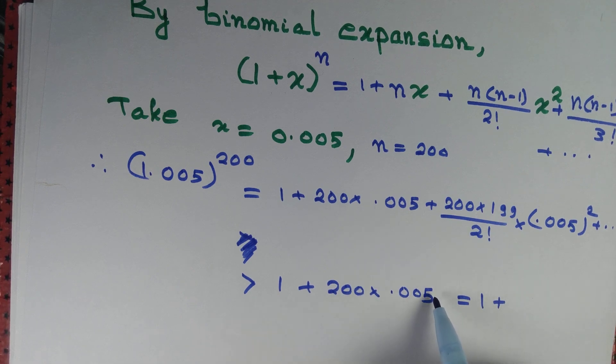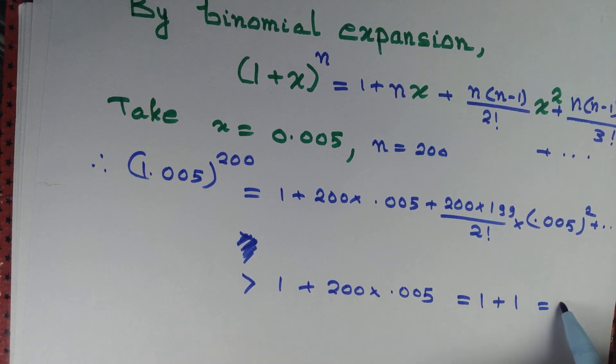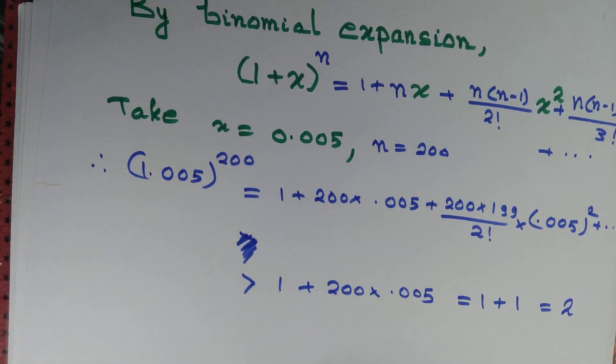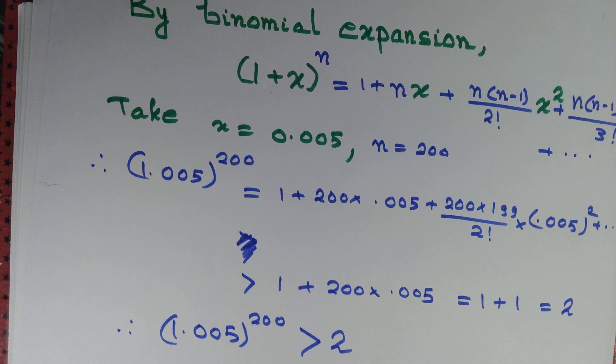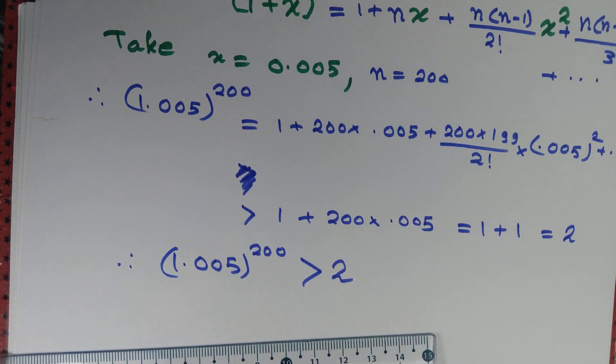And you can say which is exactly equal to 1 plus 1 equal to 2. Therefore, 1.005 to the power 200 is greater than 2, and we are done if we know binomial expansion.